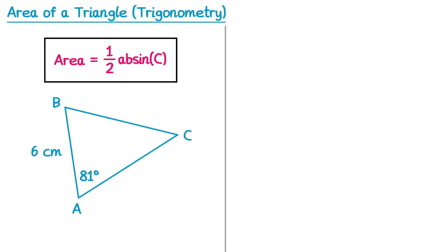For this triangle I've given only one of the sides, but I'm going to tell you the area: the area is 95cm squared, and we're going to find the side AC. We label AC as x. To use the area formula we need an angle and the two sides either side of it, so we use the 81° angle and the sides of 6 and x. Note that the capital letters on the outside of the triangle mark the corners, not the angles or sides, which may cause confusion, so I'll cover those up.